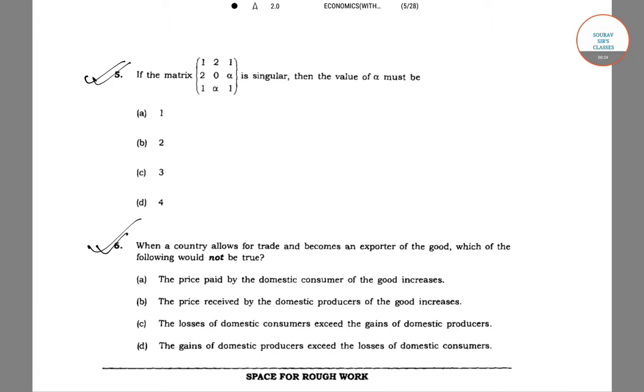In the first question, it is asked what will be the value of alpha. It is given a three by three matrix where two terms are missing and denoted as alpha. So you have to find, if the matrix is singular, what will be the value of alpha?